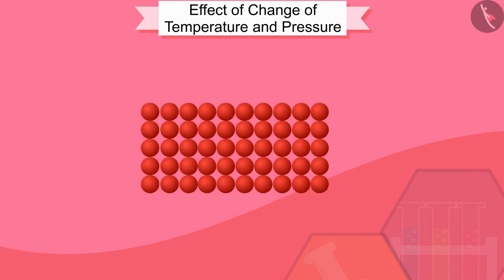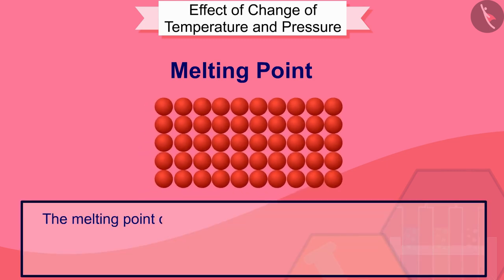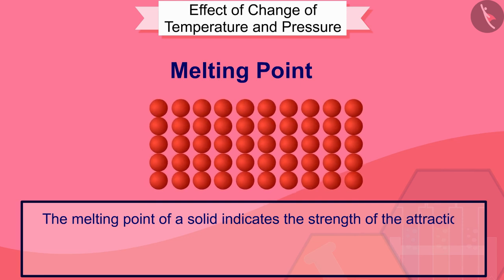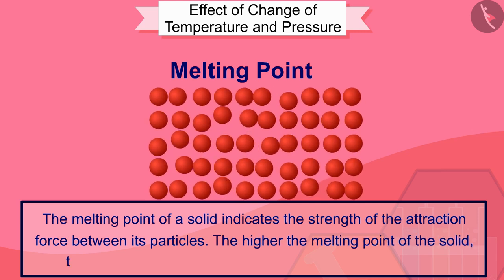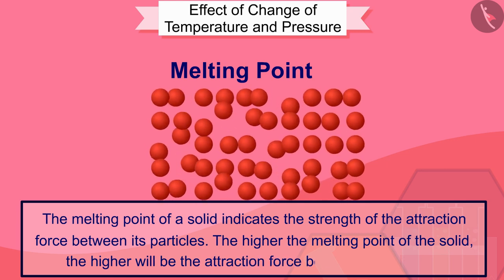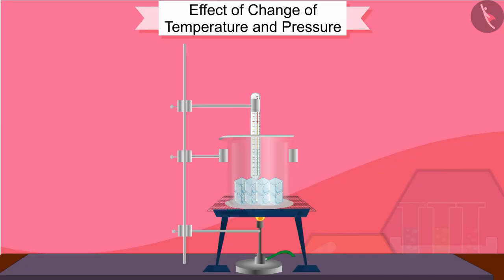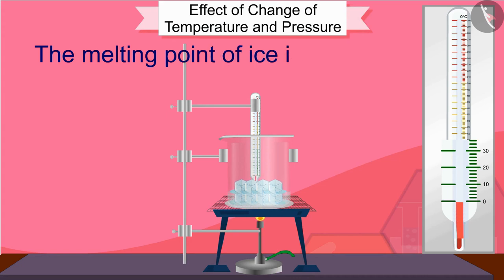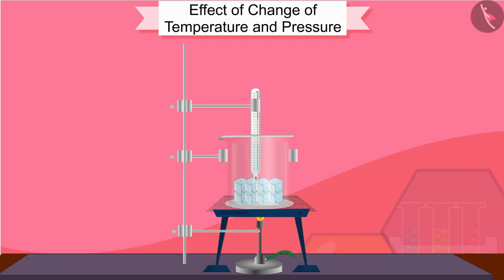A situation comes when ice (solid) melts and becomes water (liquid). The temperature at which a solid melts and becomes liquid is called its melting point. The melting point of a solid indicates the strength of the attraction force between its particles — the higher the melting point, the higher the attraction force. In this activity you must have observed that the melting point of ice is 273.15 Kelvin. The process of conversion from solid state to liquid state is also called fusion.